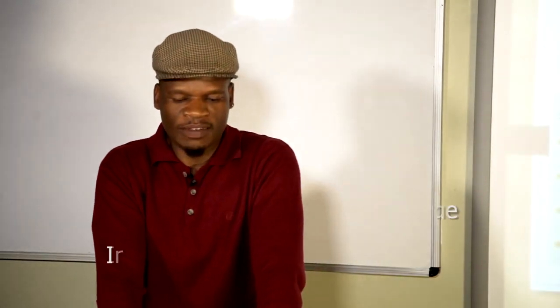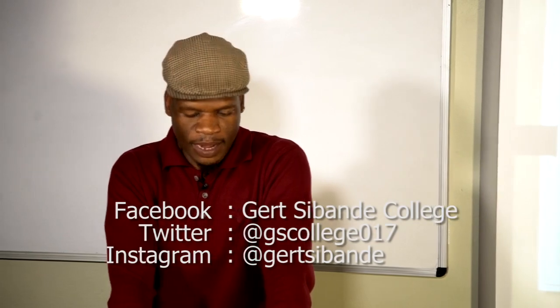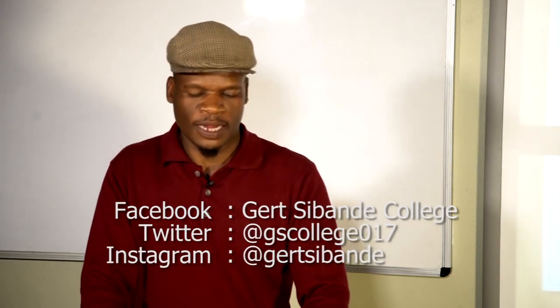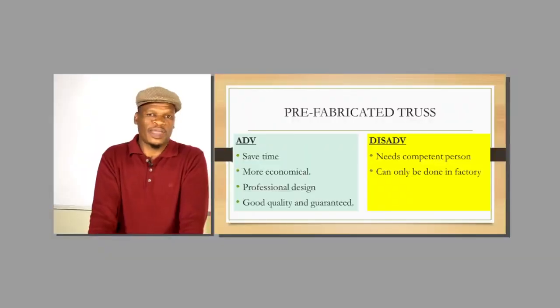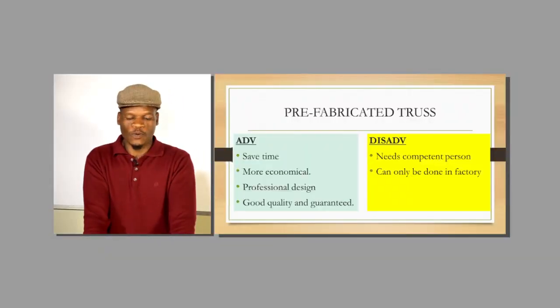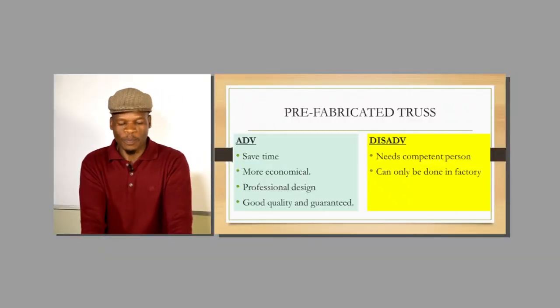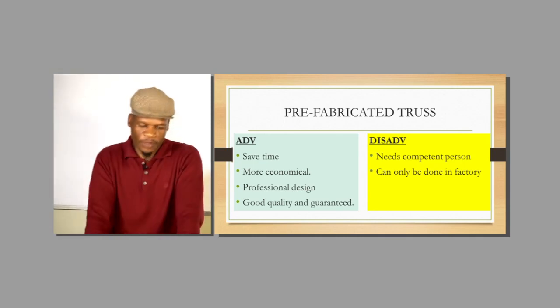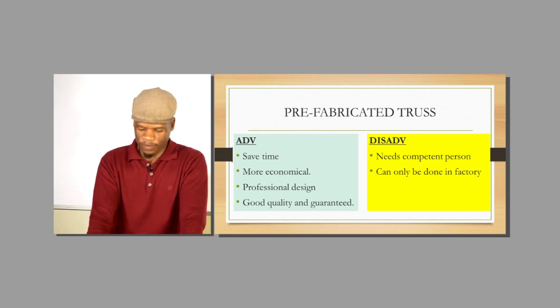The disadvantages of the prefabricated truss are: if you are not a competent person, you cannot build it — it can only be done in the factory. If there is any error on the truss when it is delivered on site, you will have to take it back to the factory, which will cost more. But if that doesn't happen, as indicated in the advantages, it will save you a lot of time.